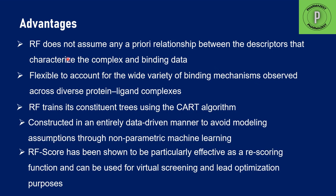The advantages of RF score are: it does not assume any prior relationship between the descriptors that characterize the complex and binding data; it is flexible to account for a wide variety of binding mechanisms observed across diverse protein-ligand complexes; it trains its constituent trees using the CART algorithm; and it is constructed in an entirely data-driven manner to avoid modeling assumptions through non-parametric machine learning. Unlike other scoring functions based on force field or physics-based methods, no molecular modeling assumptions are used — it is entirely based on available data.